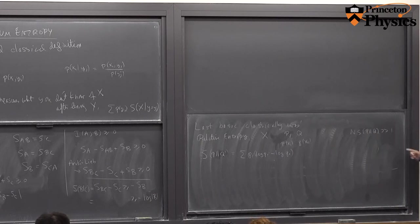You might remember we explained an example of its significance. If you have a hypothesis that a system is described by q, but the correct answer is p, after n trials you can ask: will you be sure that your original hypothesis was wrong? The criterion is that when n times the relative entropy is large, you'll learn the hypothesis was wrong.